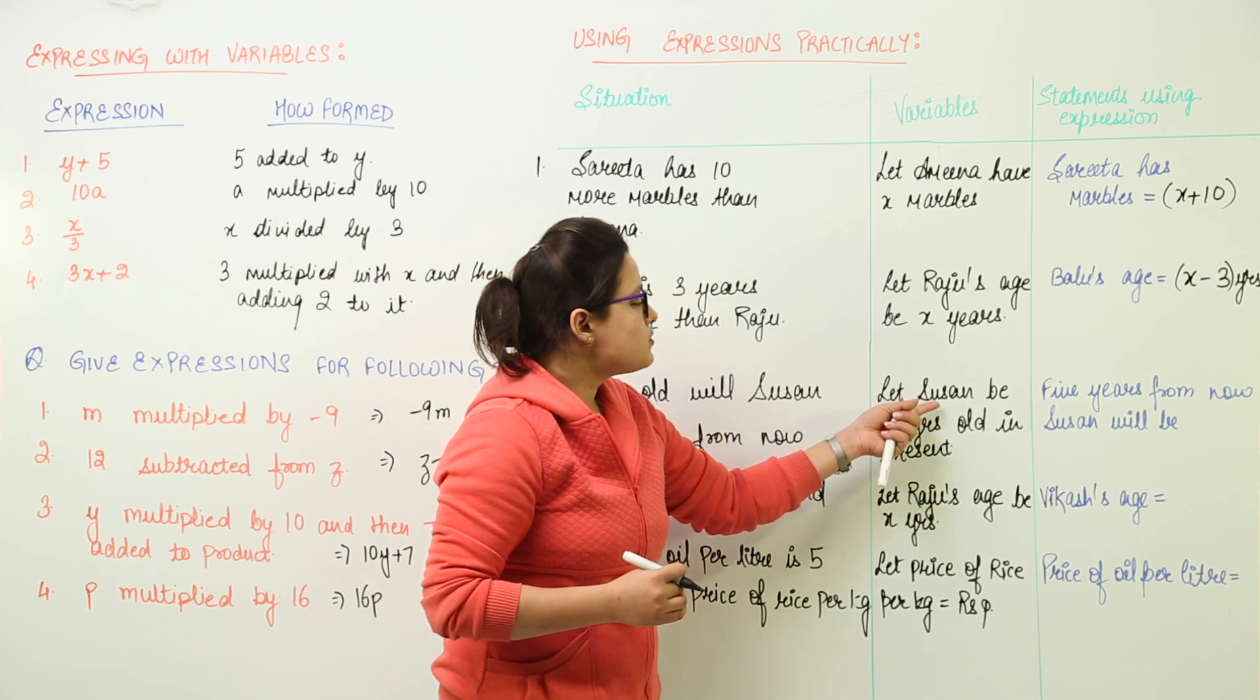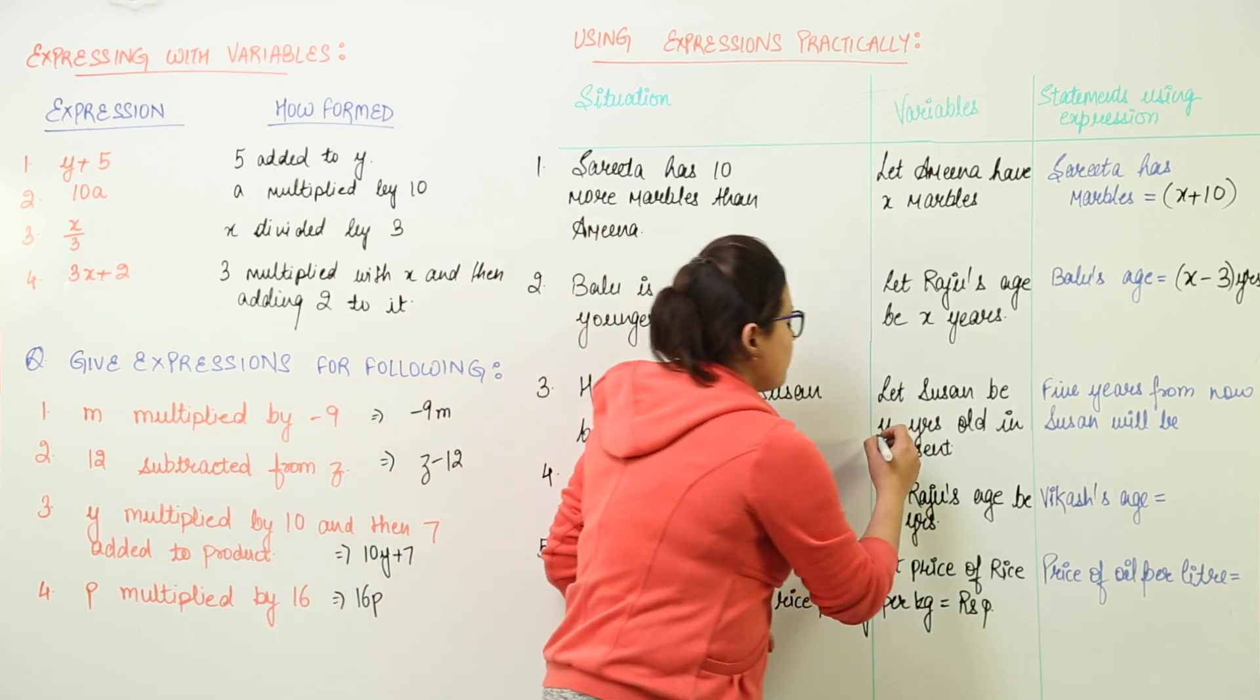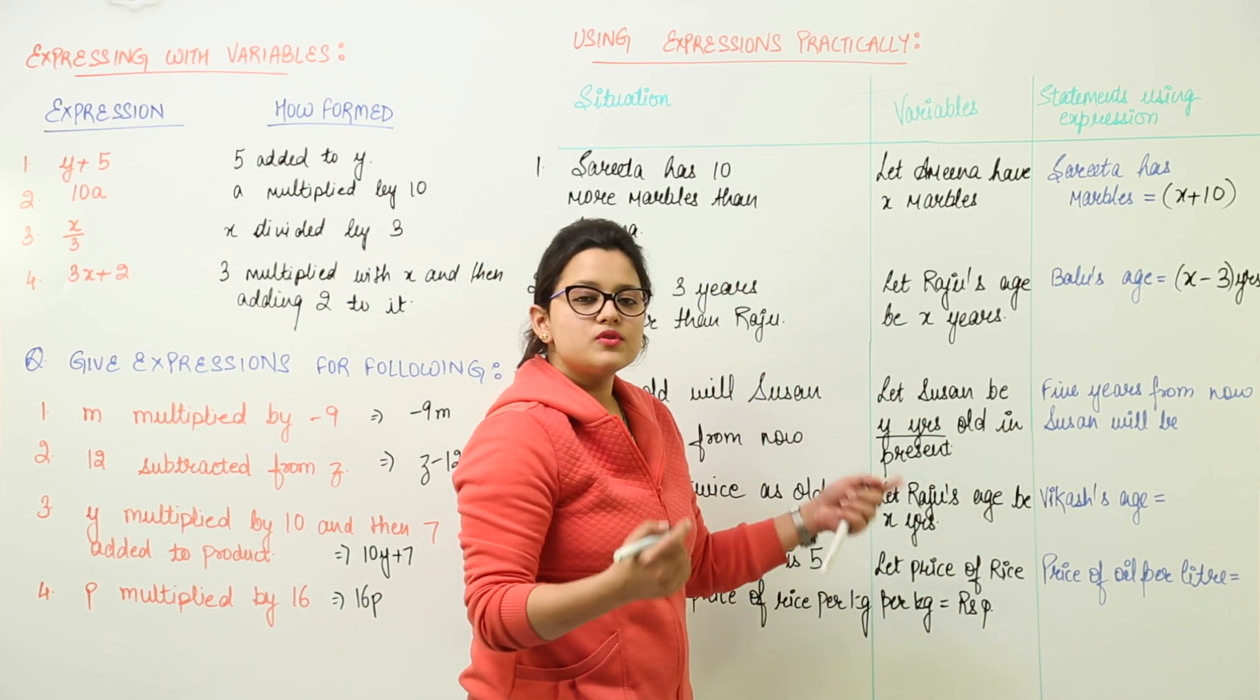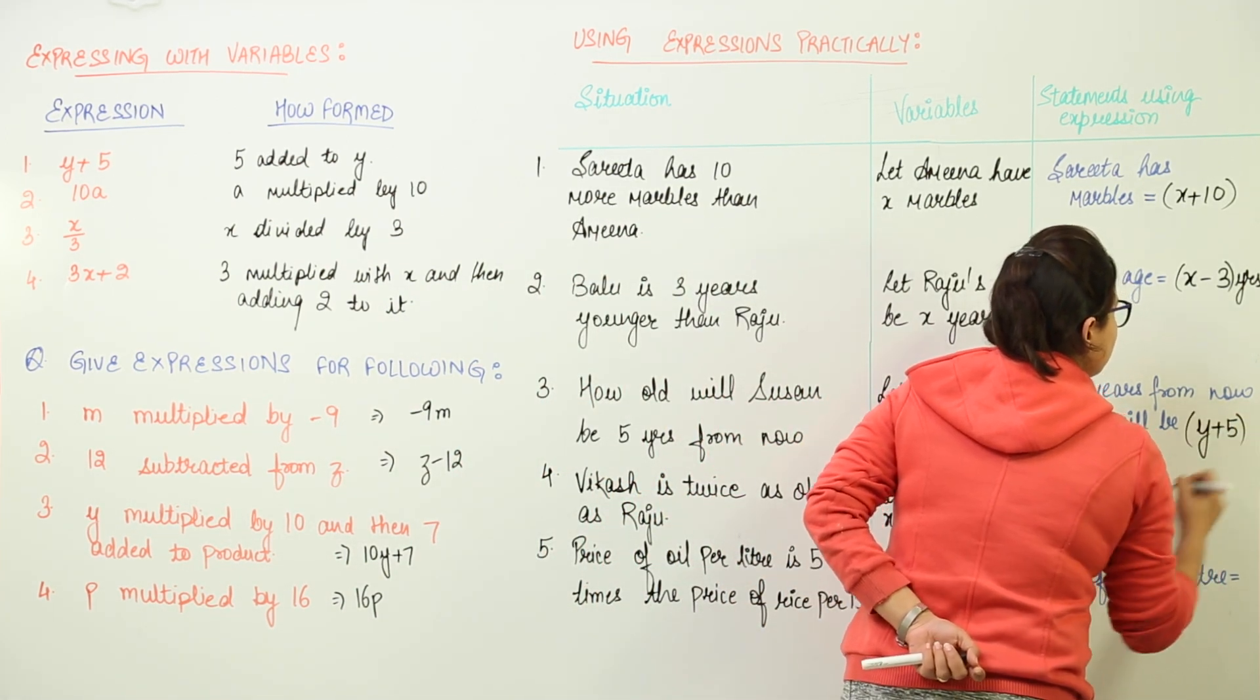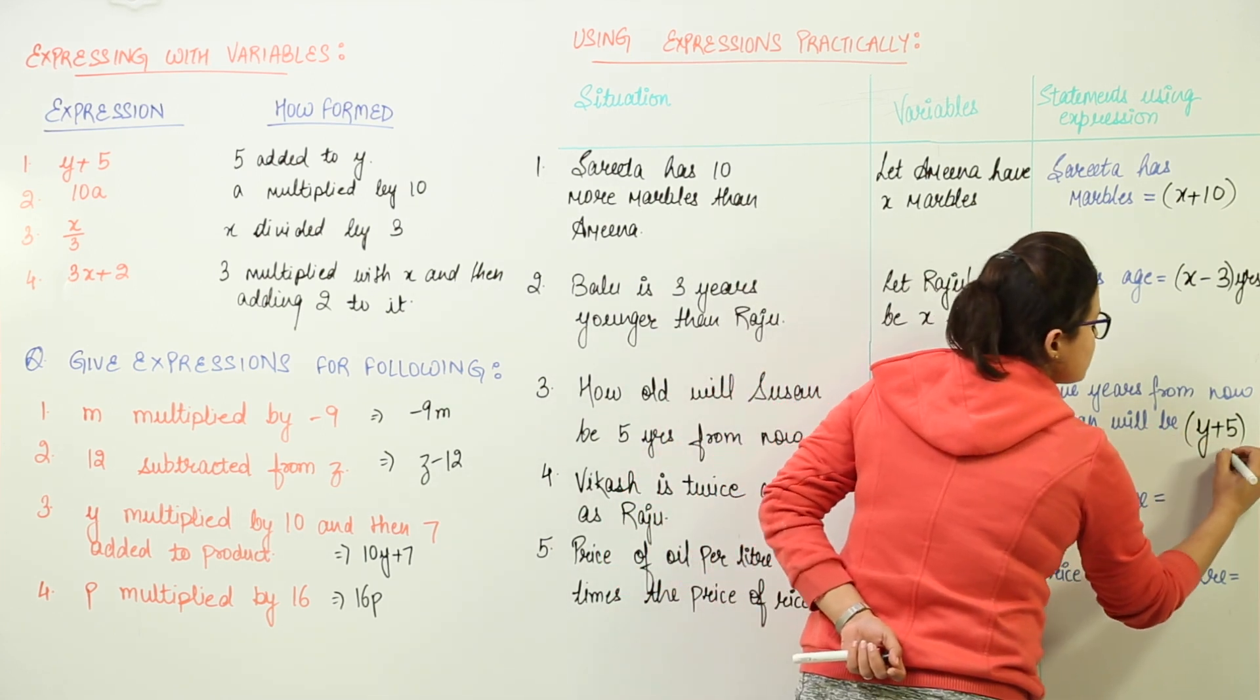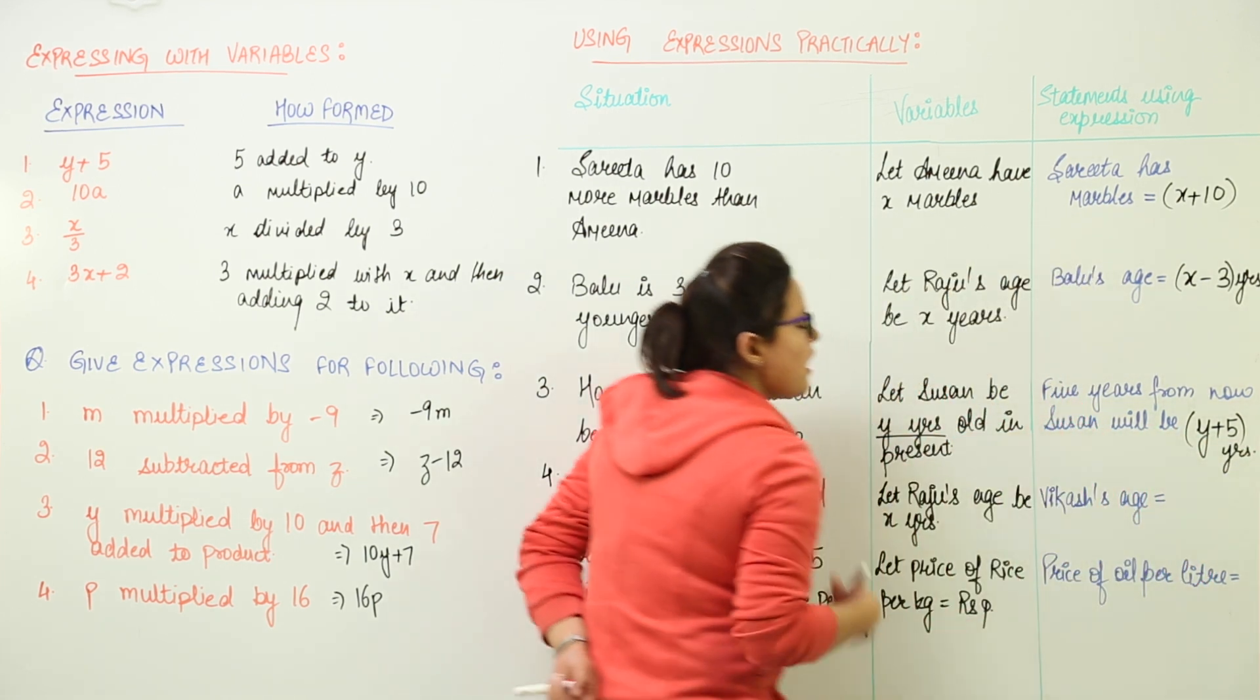So we would assume Susan's present age to be y years and 5 years from now means she would be y plus 5. That means y plus 5 will give her age after 5 years.